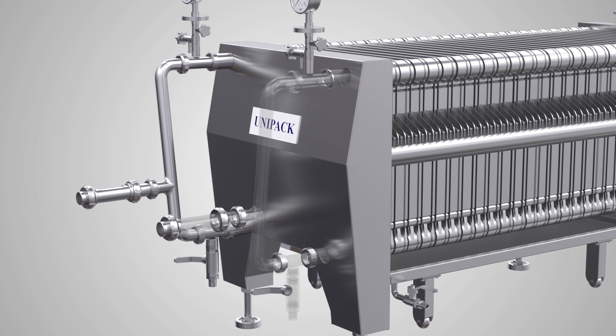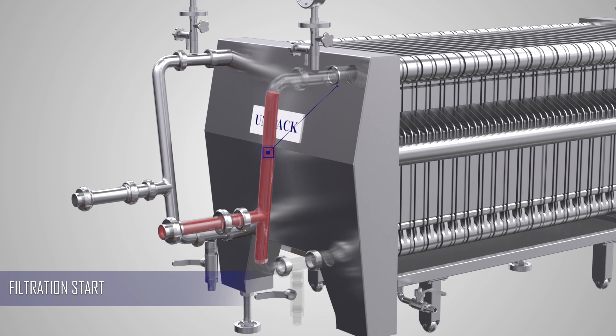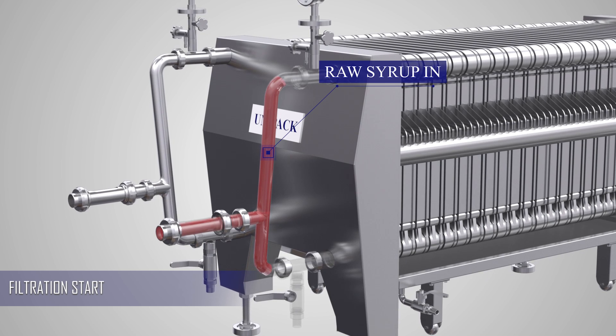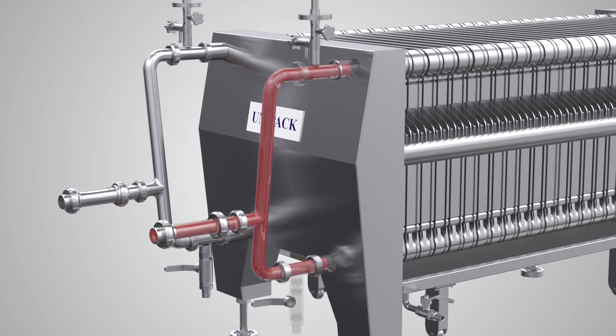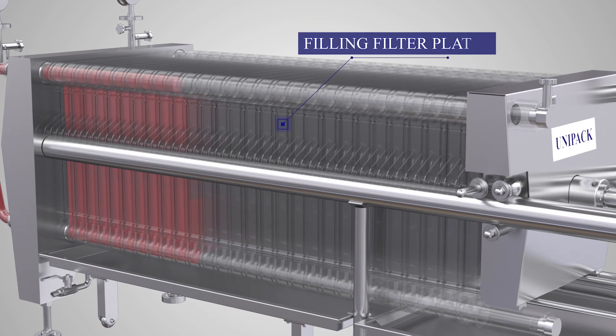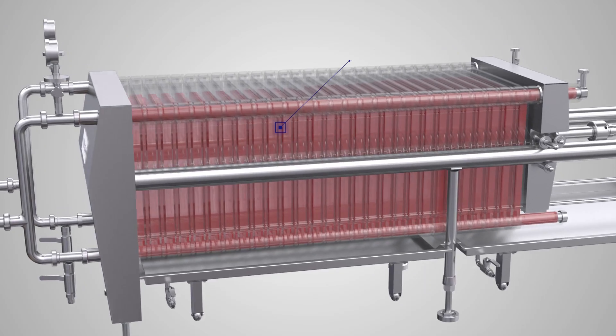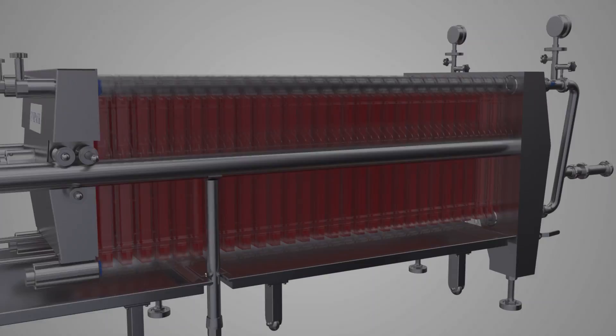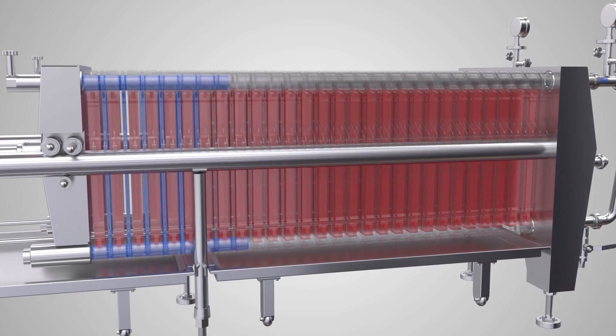The unfiltered liquid is fed to the inlet channel formed through the sockets on the frames under pressure using a pump or pressure in the feed tank. It travels through the opening in the frame sockets and the filter paper to deliver the filtered liquid from the channel formed by the sockets on the plates.